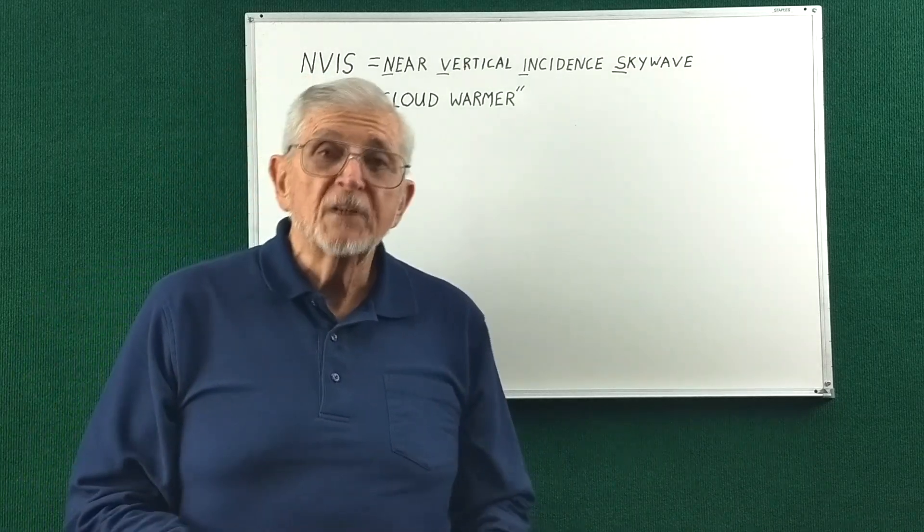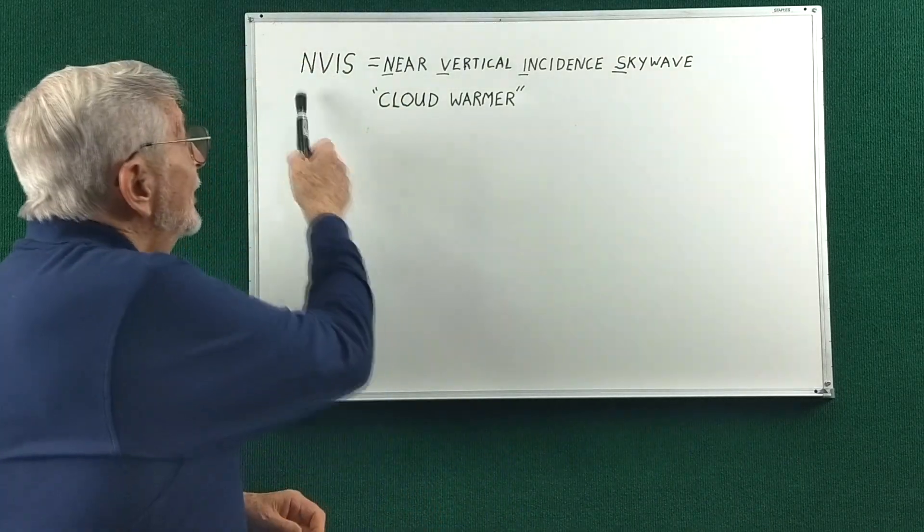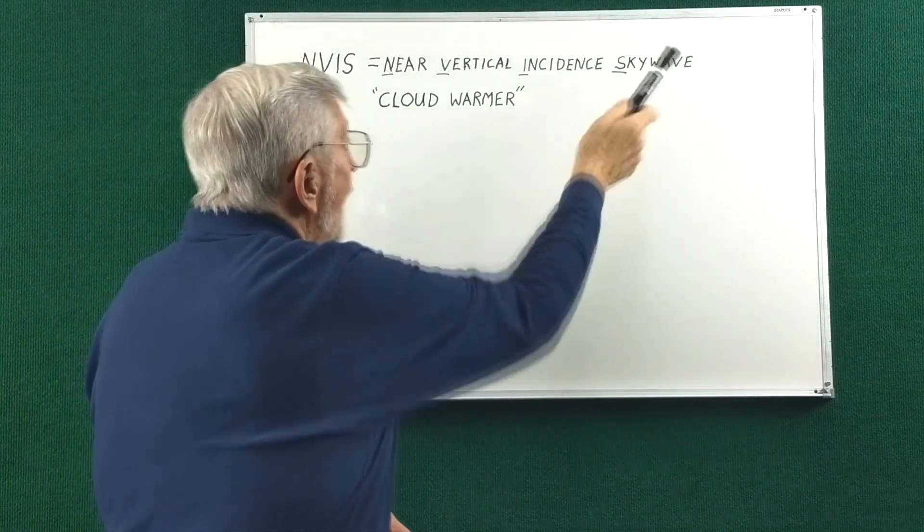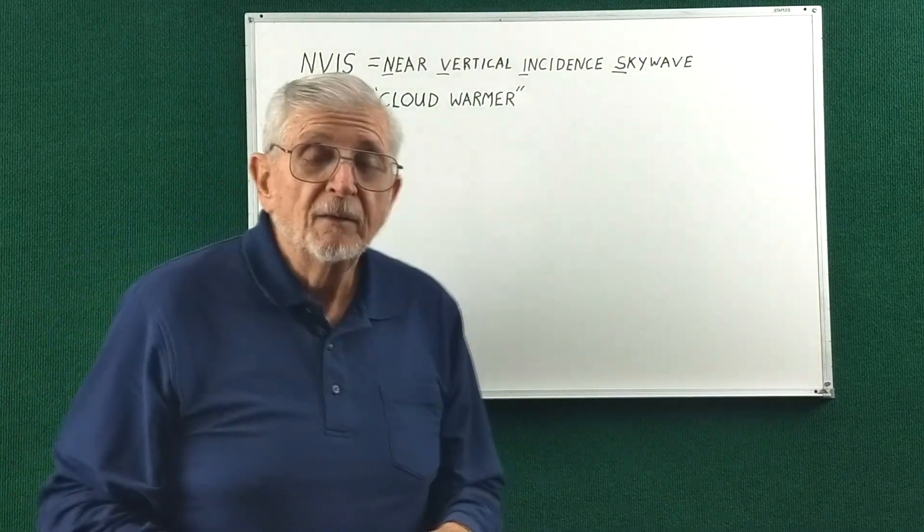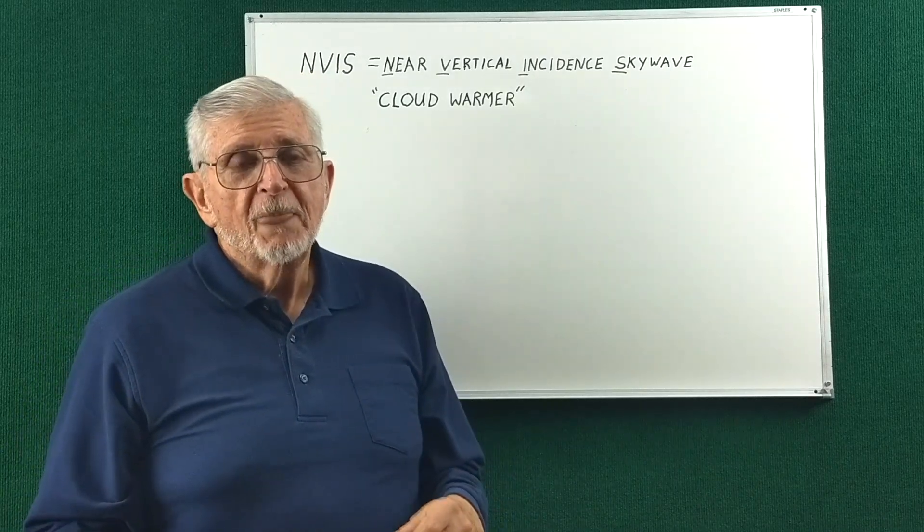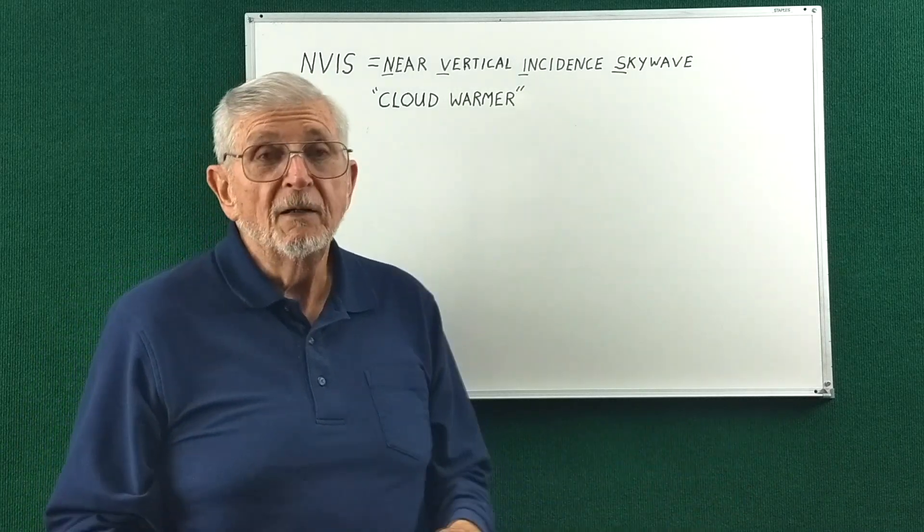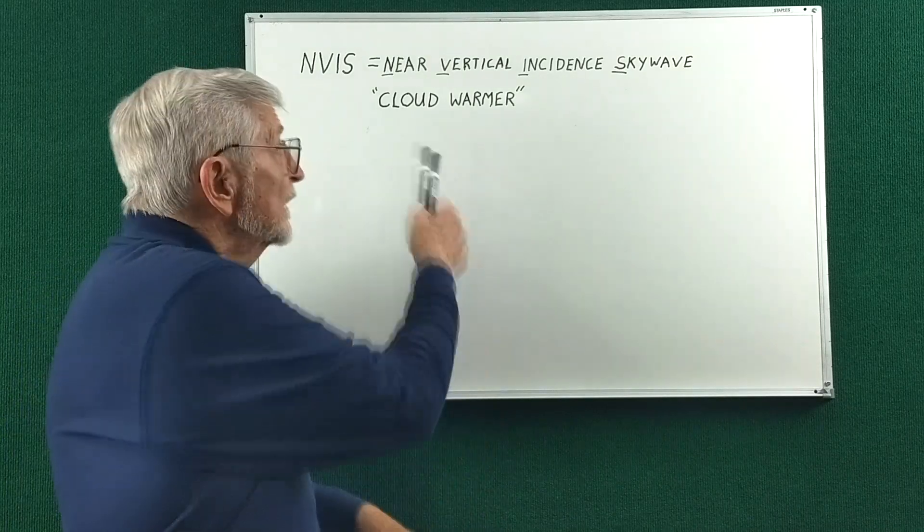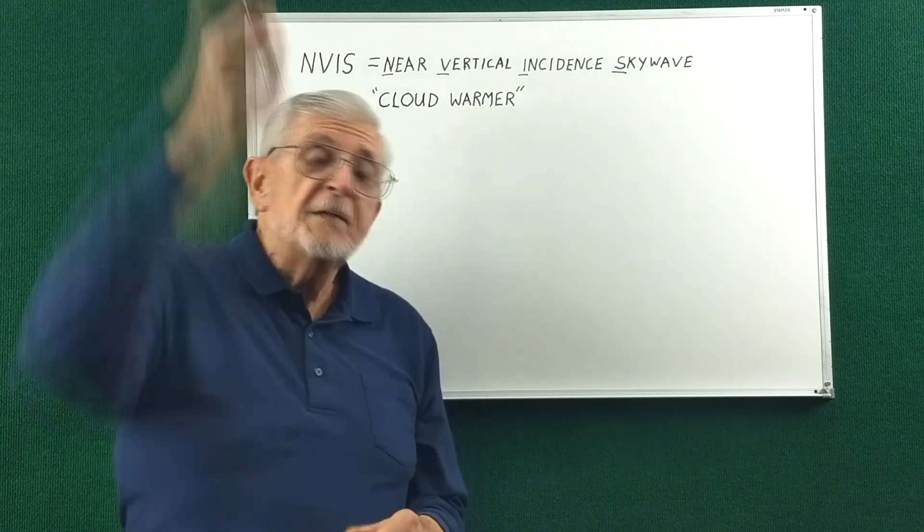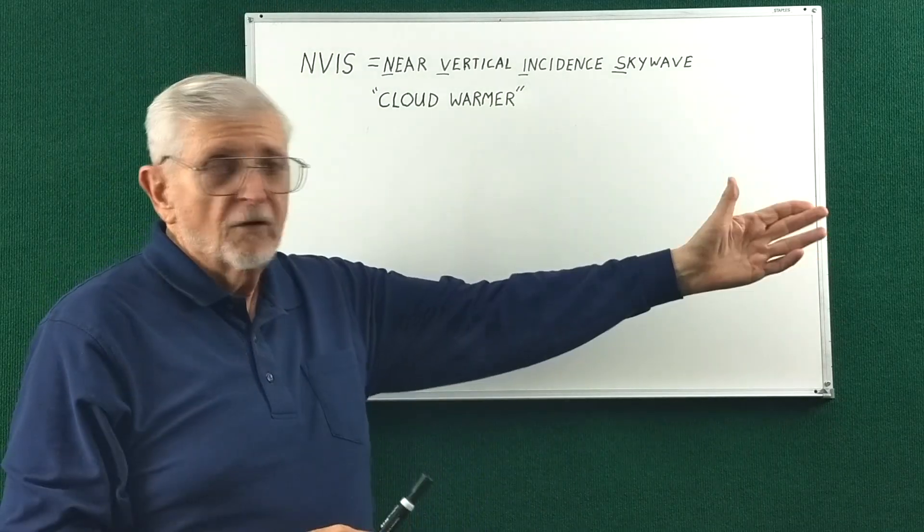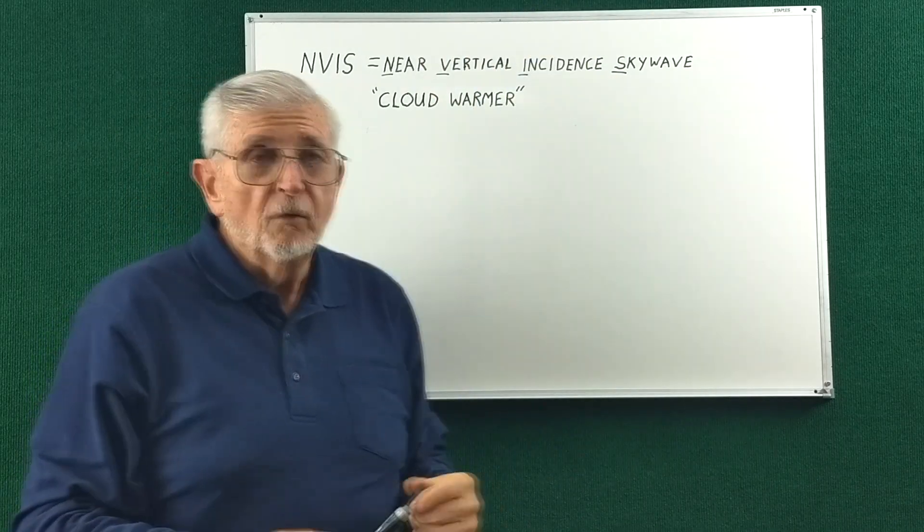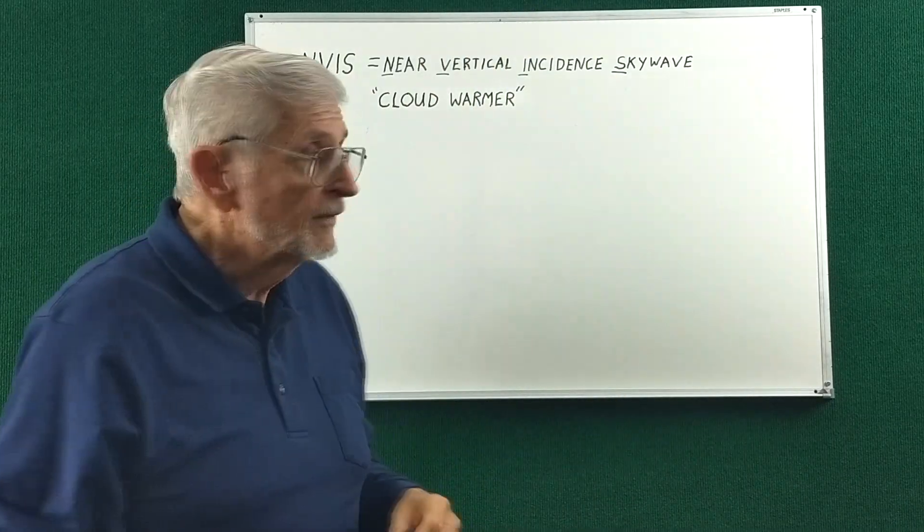The antenna type that Chris was referring to, the NVIS antenna, stands for Near Vertical Incident Skywave. In the old days, when people couldn't get their antennas very high, we used to refer to them as cloud warmers, because the radiation tended to go up at a steep angle rather than a very low takeoff angle. The incidence angle was very high, so the RF would tend to hit the clouds.